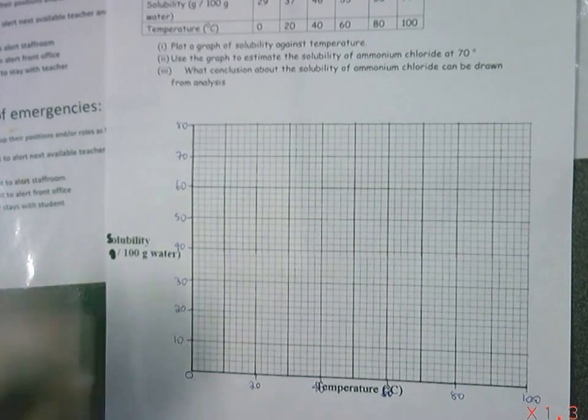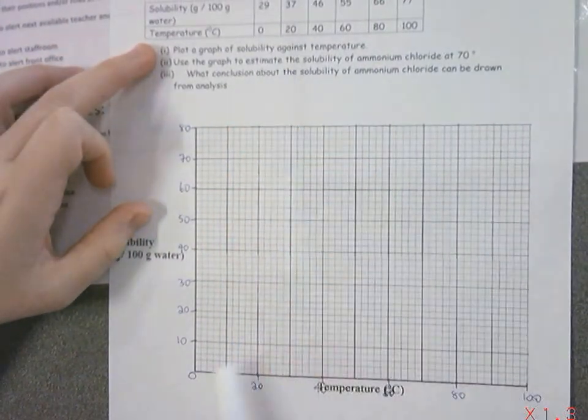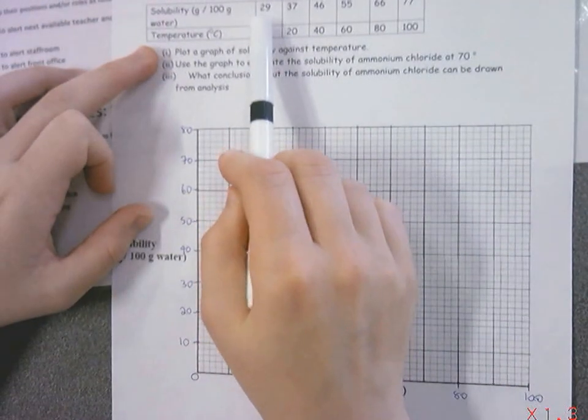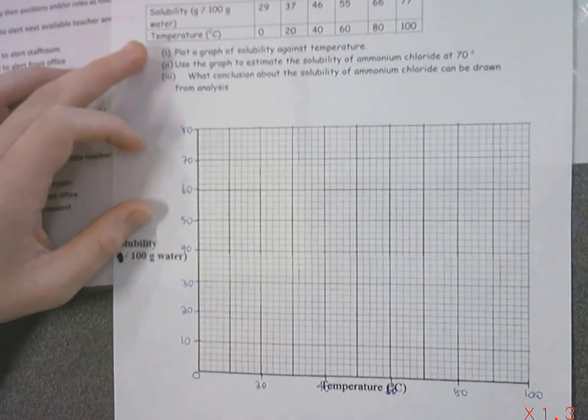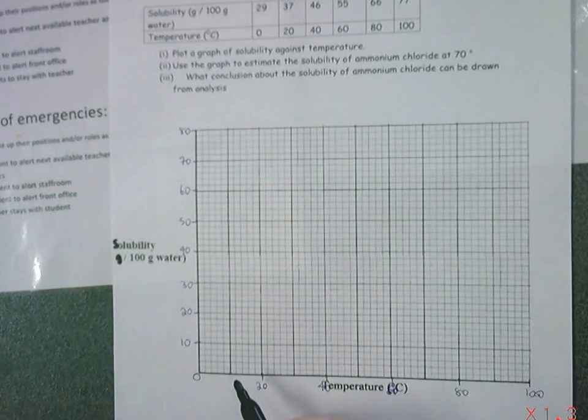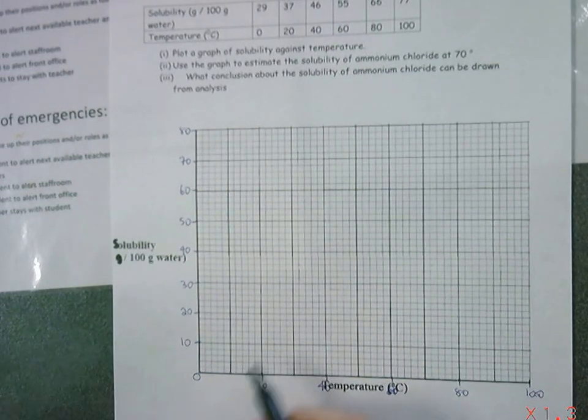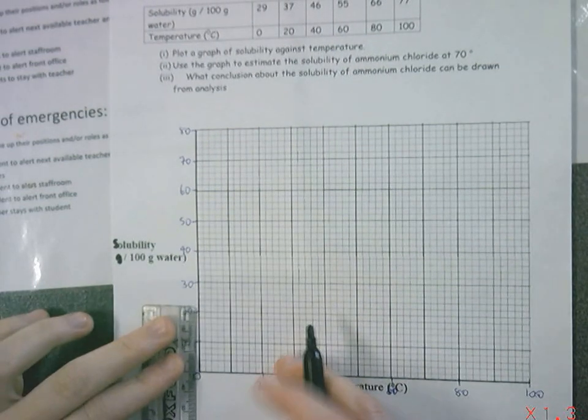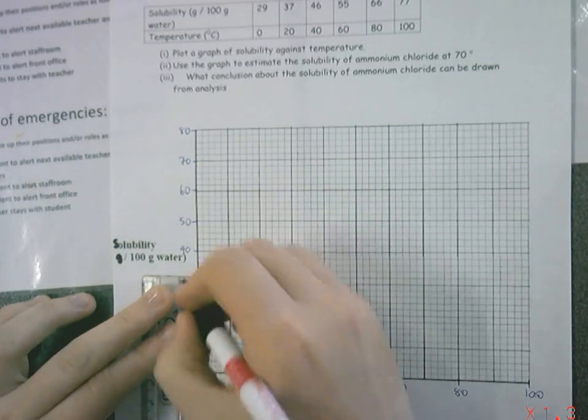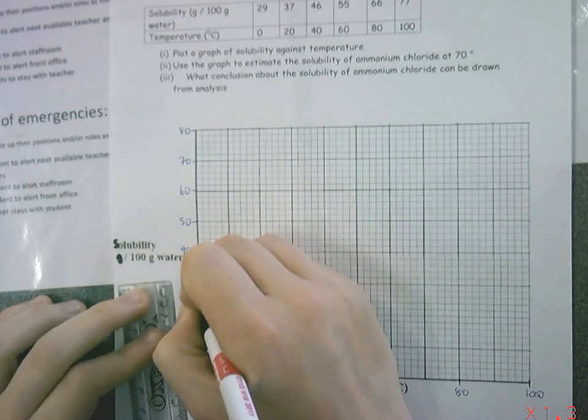Now we have our figures in. Sometimes figures might be on the graph question, so in that case, happy days. But in this case, we've had to figure it out ourselves. You just need to take your time, look at the amount of boxes you have, and then go from there, giving yourself enough room. So the first point to plot: 0 on the x-axis for temperature. And we're going to solubility, which is the y-axis, 29. So 0. You can use your ruler if you want. 29 is going to be just before 30, so around there.